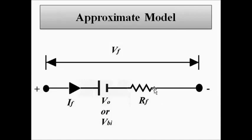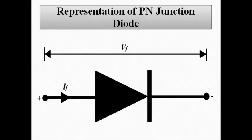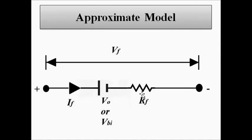The second circuit element is the forward resistance Rf — the opposition offered by the diode to the flow of current. In the approximate model, we replace the diode with a voltage source in series with this forward resistance. The forward resistance is normally in the range of several ohms, which is much less compared to the reverse resistance, which is on the order of megaohms.